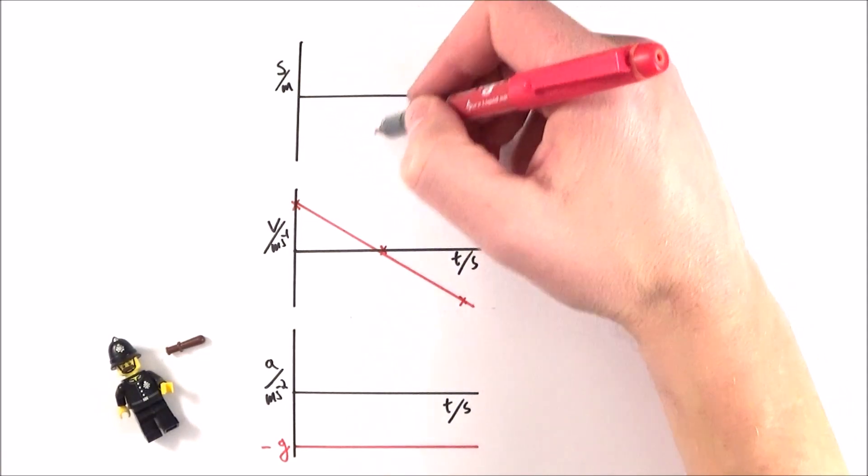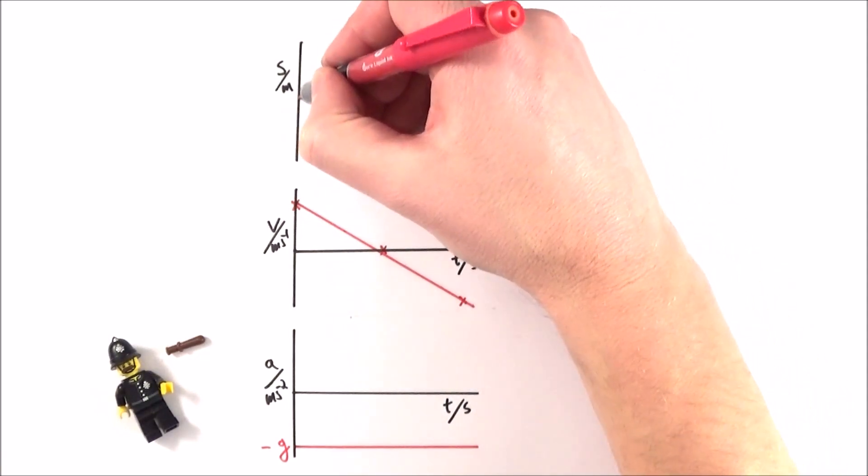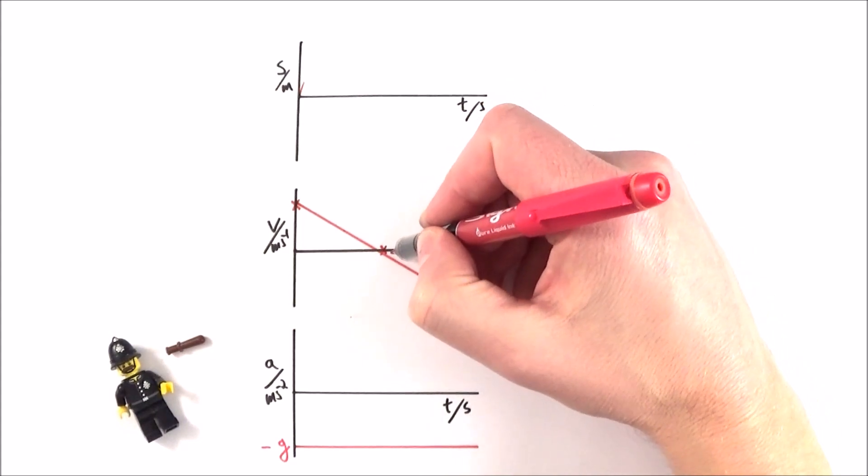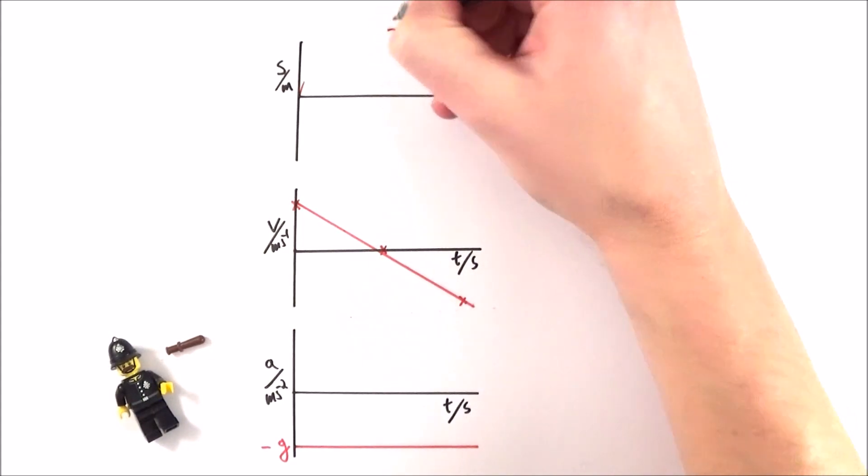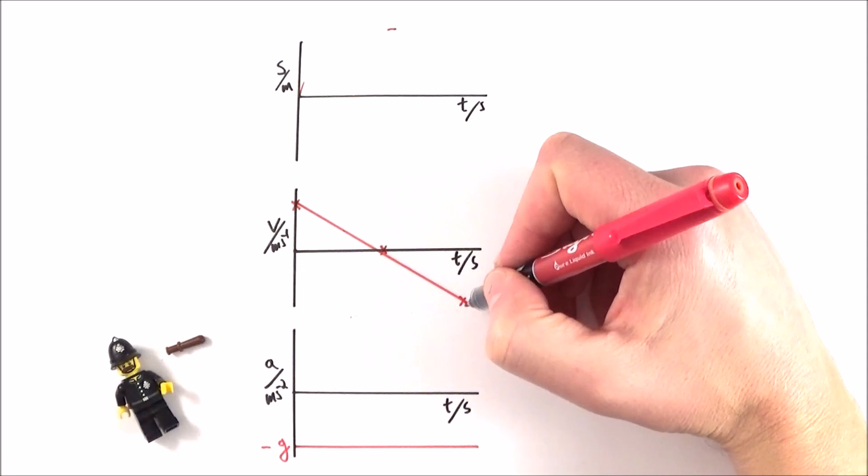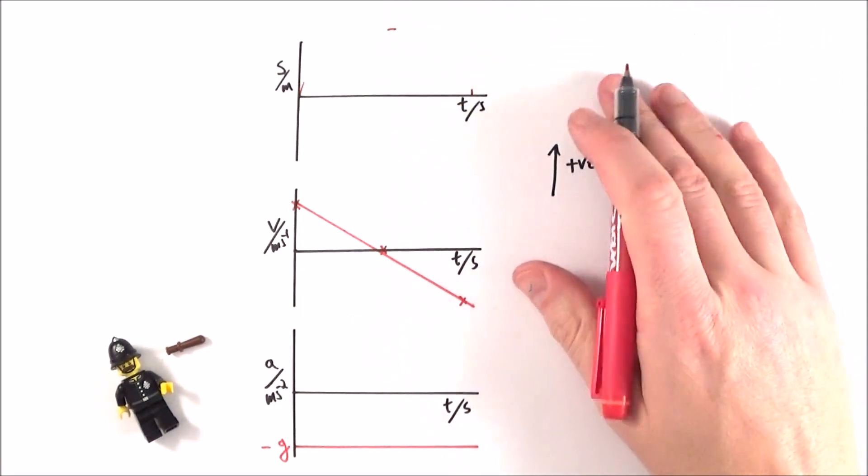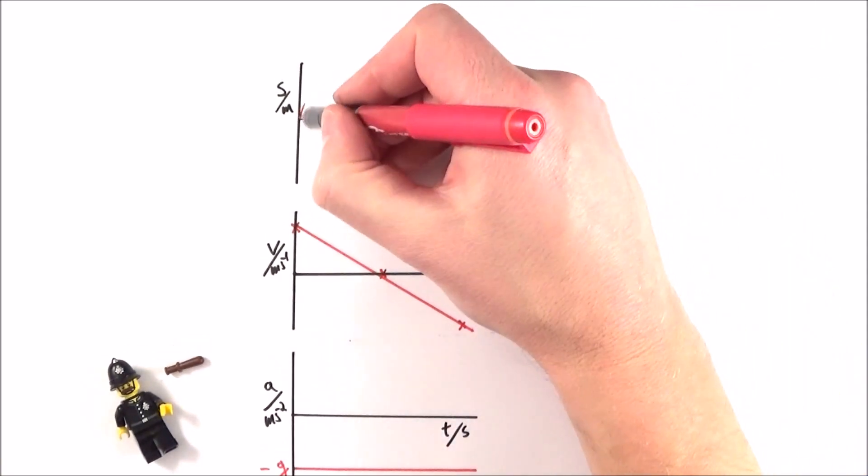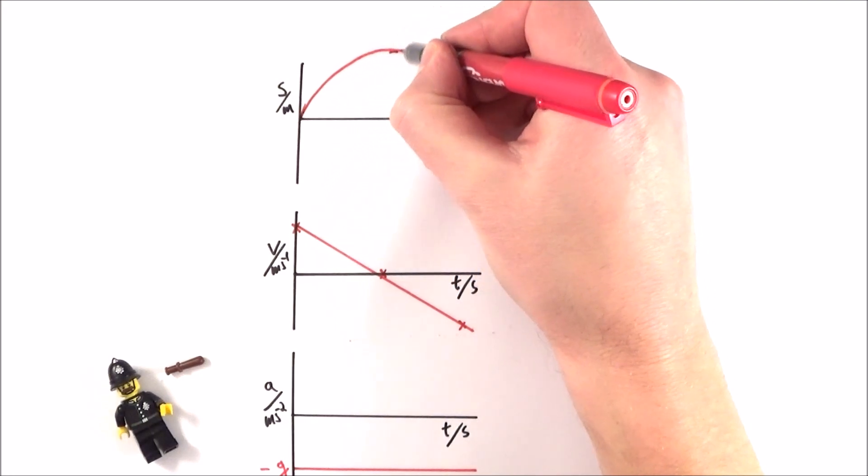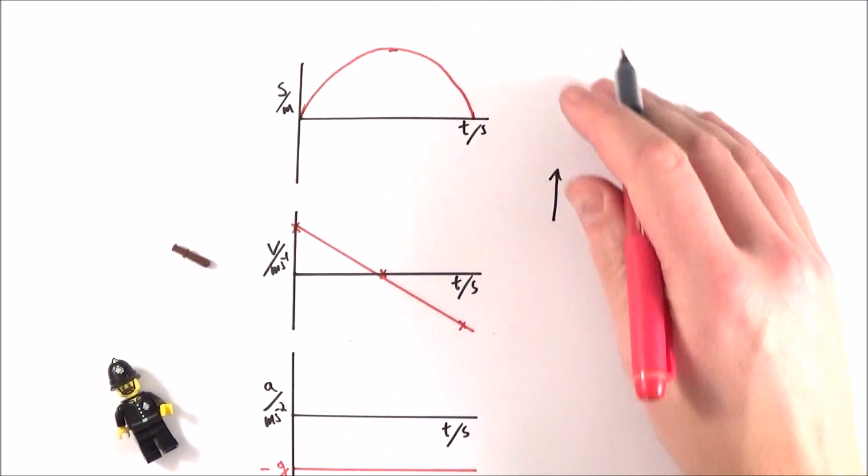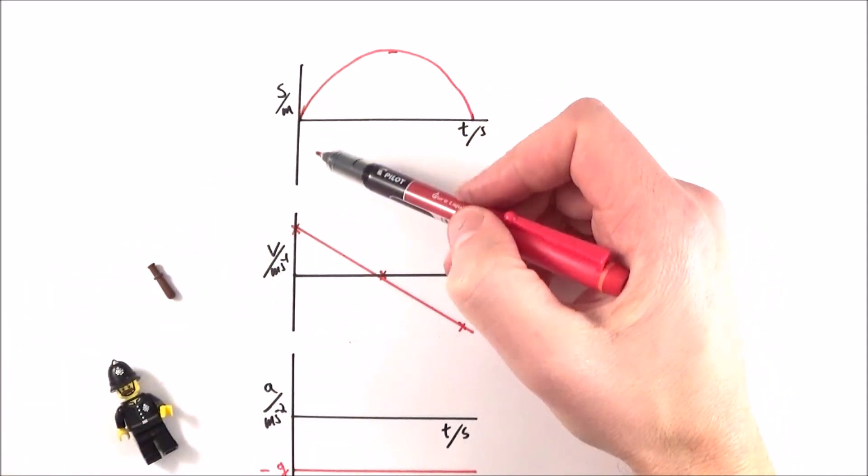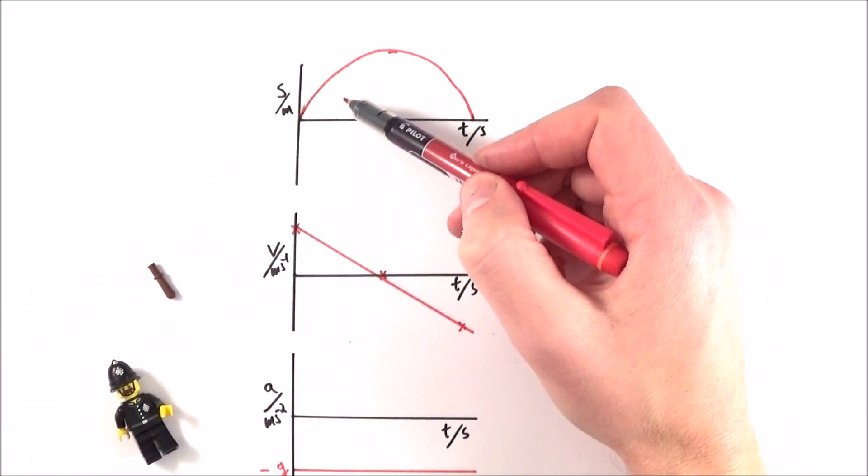So this one here is then a graph of that gradient. So initially, the gradient must be very steep. At some point, the gradient must be zero. And at some point, there must be a steeply negative gradient. And if we join this up on the top graph, we get something that looks a bit like that, some kind of parabola, not a circular path, but a parabola. So a constantly changing gradient.